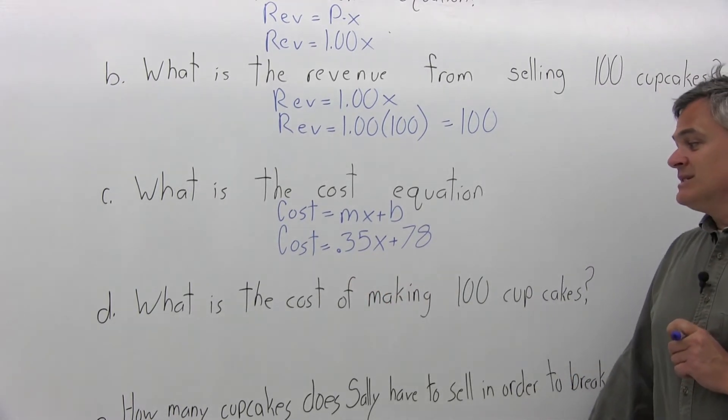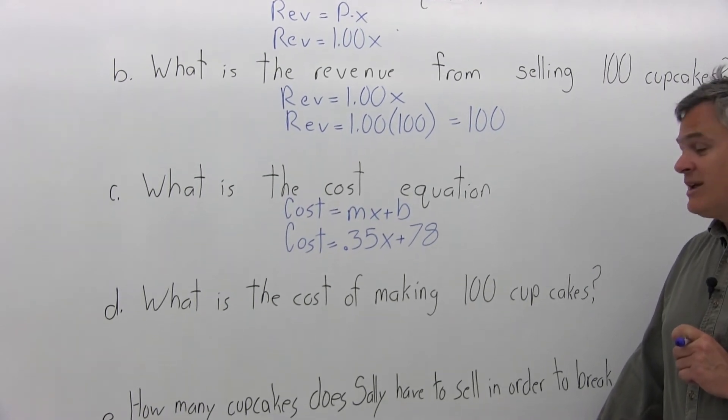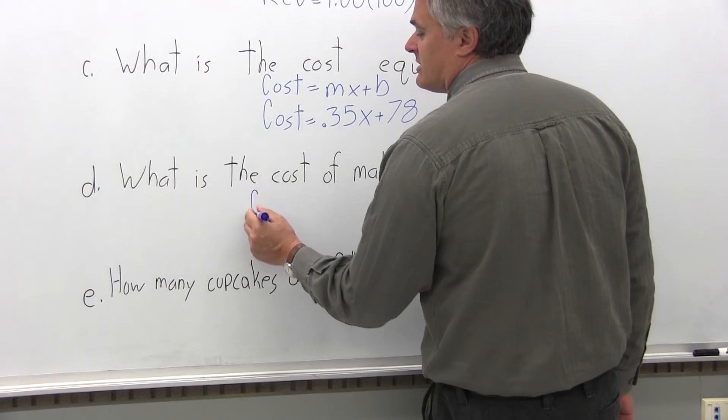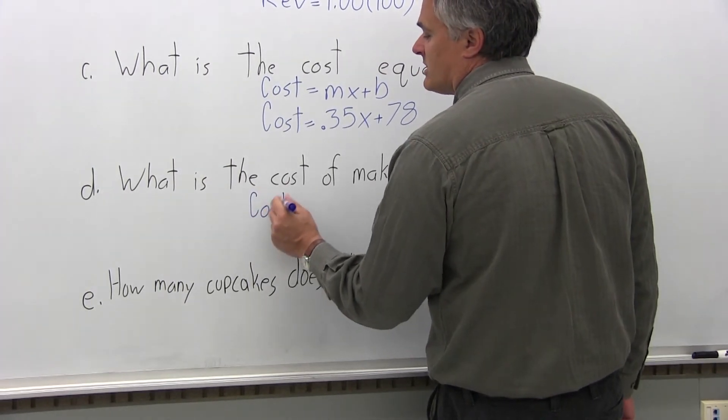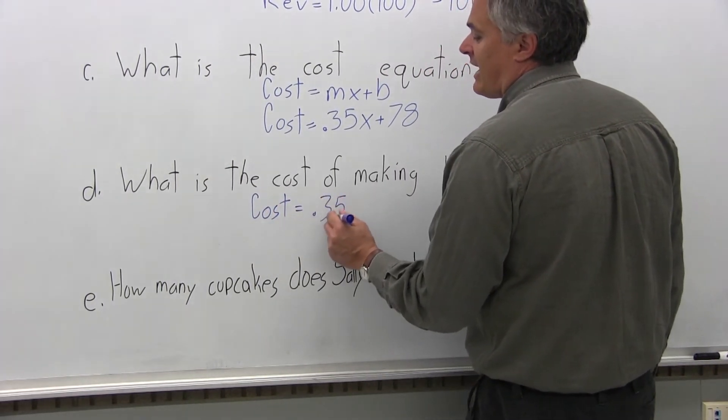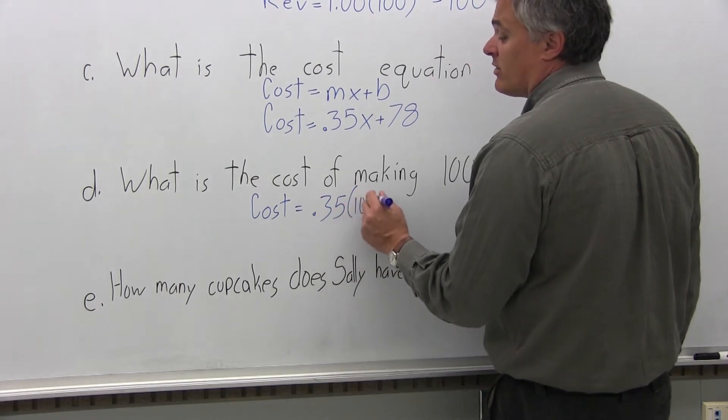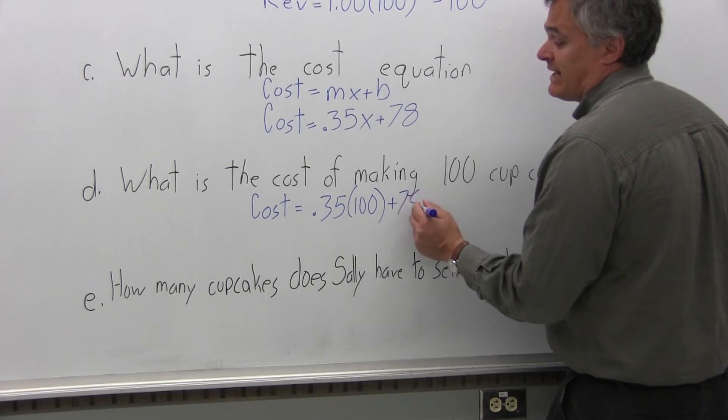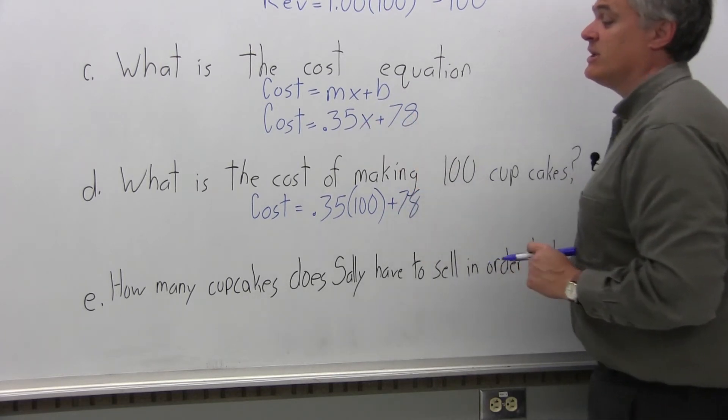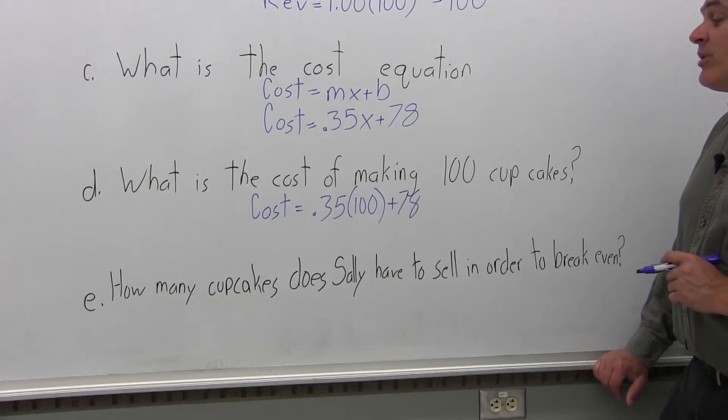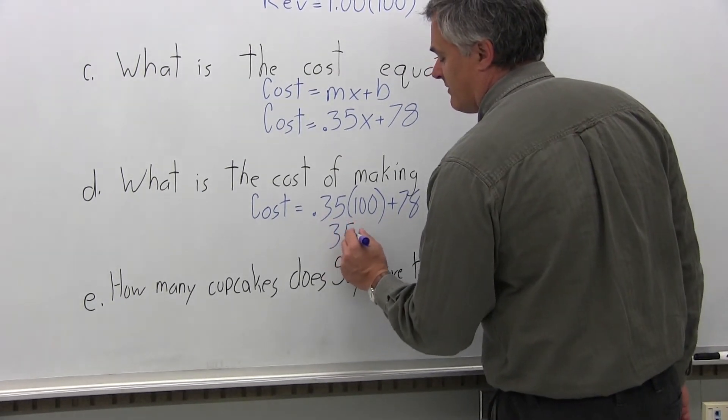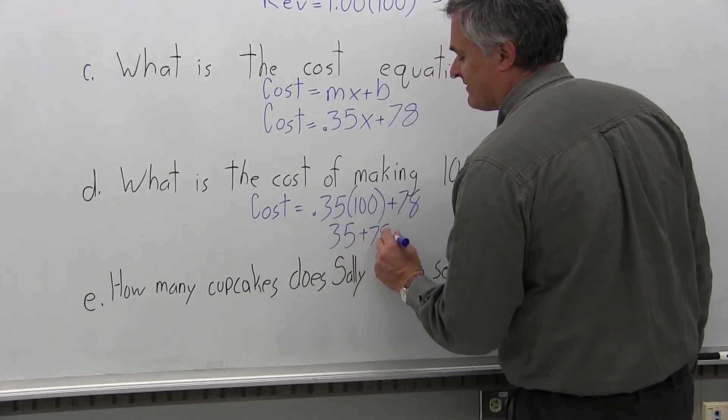Part D, what is the cost of making 100 cupcakes? So take our cost equation that we found in the previous part of .35X and we put in 100 for X because the question asked for 100, and we add 78 because that's in the equation.